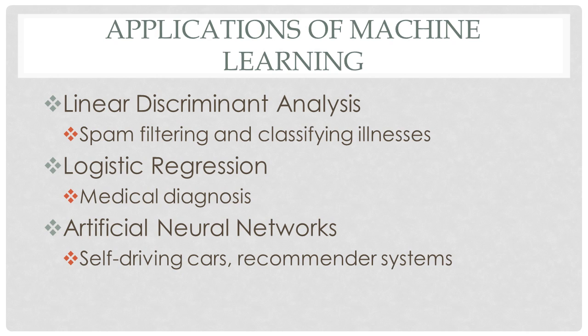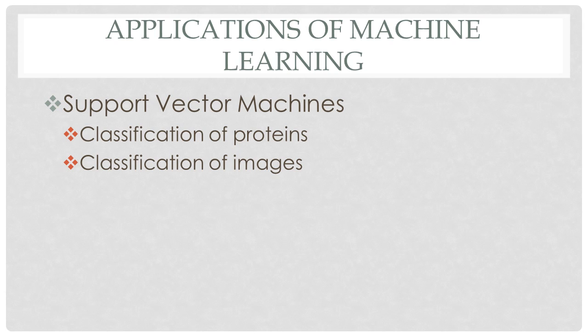Artificial neural networks can be used for applications such as self-driving cars, recommender systems, online marketing, reading medical images, speech, and face recognition. Real-world applications of support vector machines include classification of proteins and classification of images.